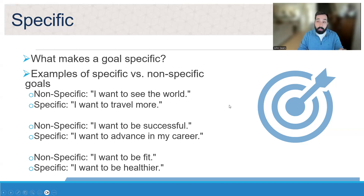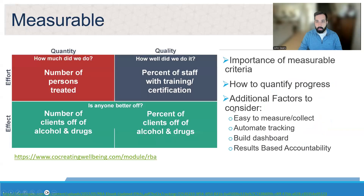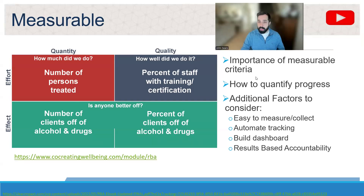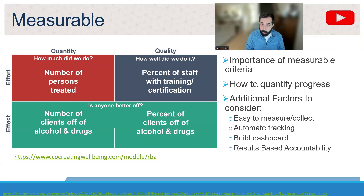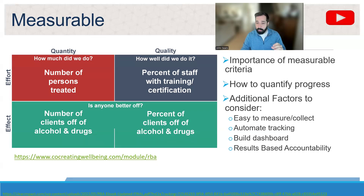We want things that are quantifiable and not ambiguous — that'll be more important as we discuss the other parts of the SMART goal. Something I really want to highlight is Measurable. There are lots of ways to quantify measurables, but when I think of measurable I think of results-based accountability. In terms of quantity, quality, effort, and effect: how much did we do, how well did we do it, is anyone better off?